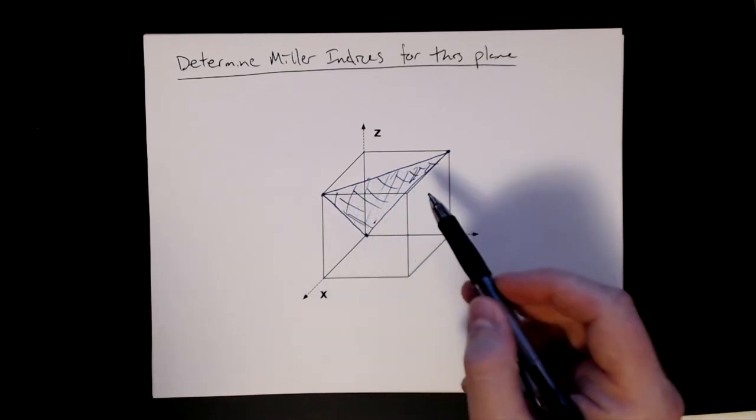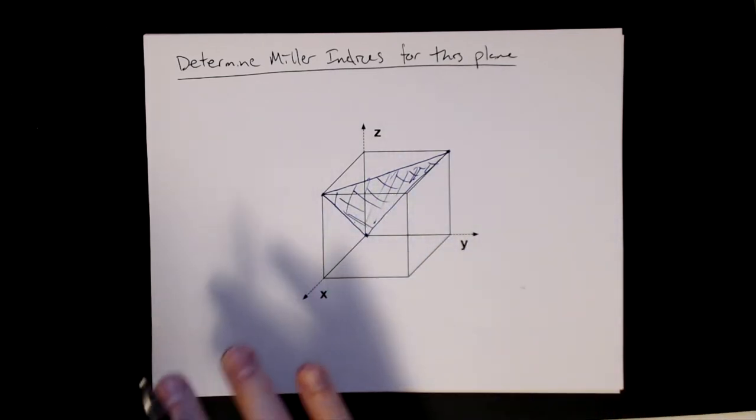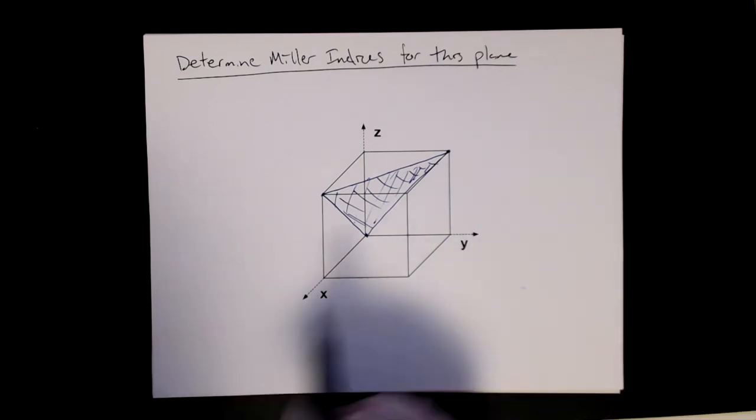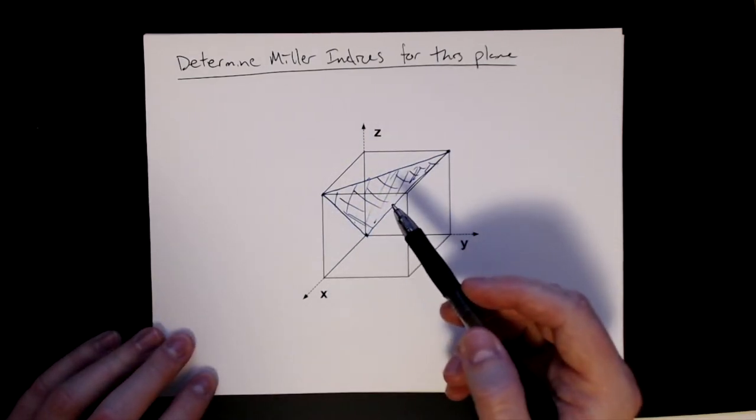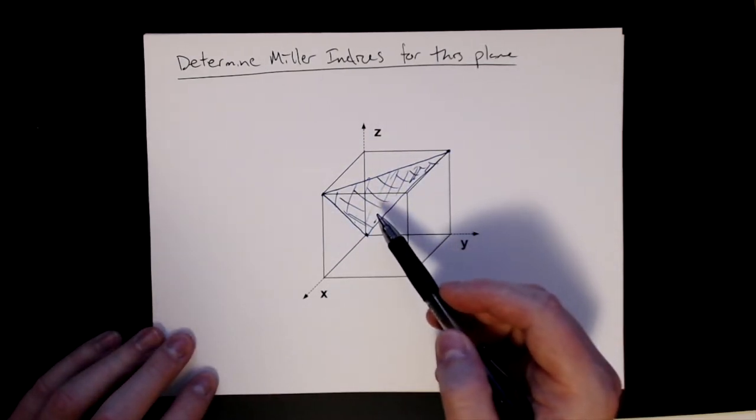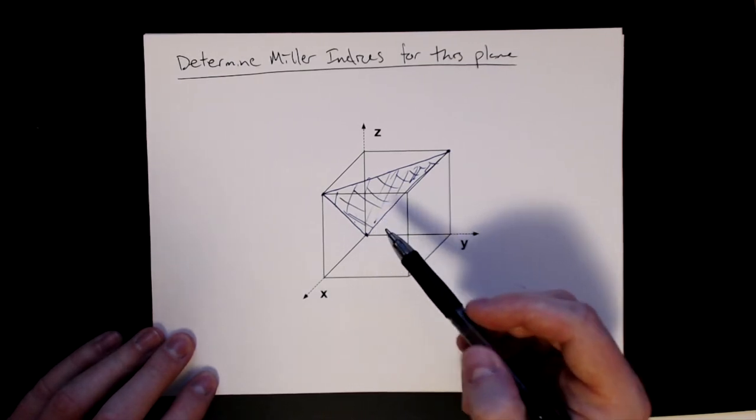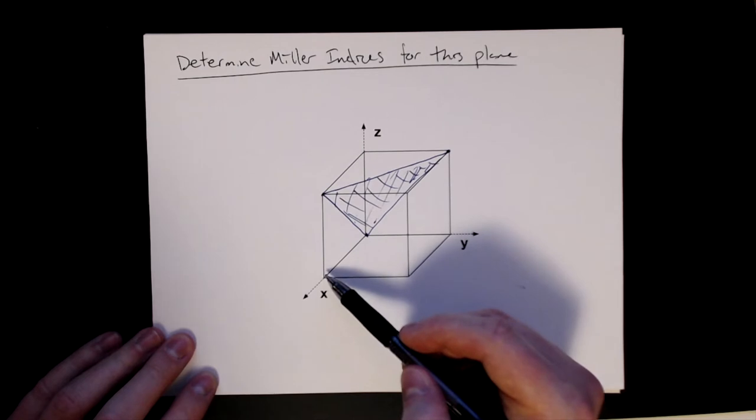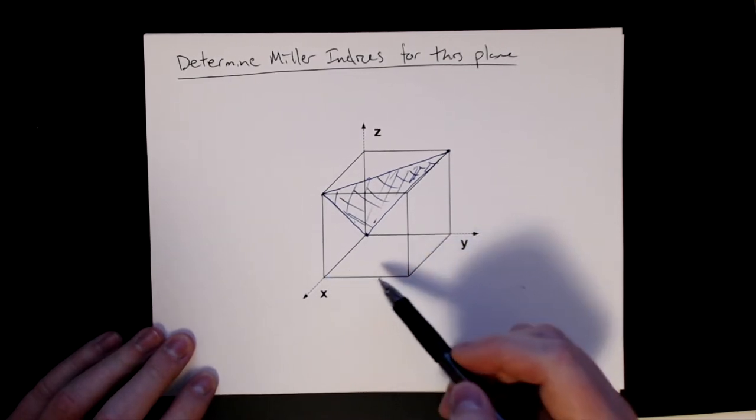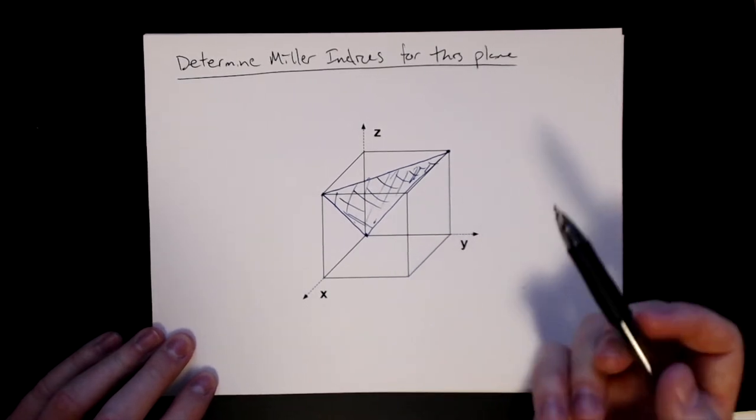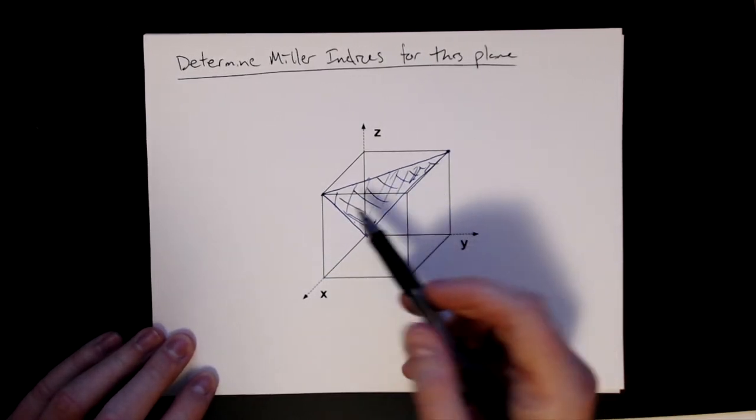Because this is just showing the plane within this unit cell, but again, it's an infinite plane, so it extends out. We can redraw it to do that, but we want to make our lives as easy as possible. So what I'm going to try to do is pick a position where I can see all the intercepts. I can't really see it here, here, here. You can use all those, but you'd probably have to redraw this plane.